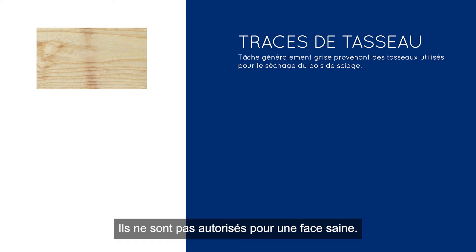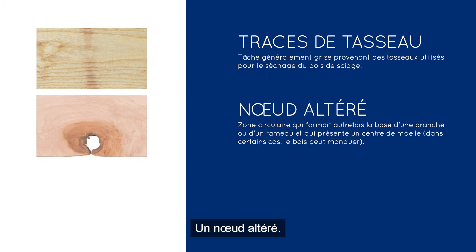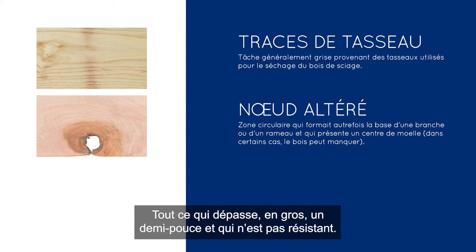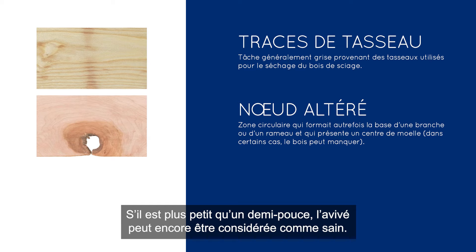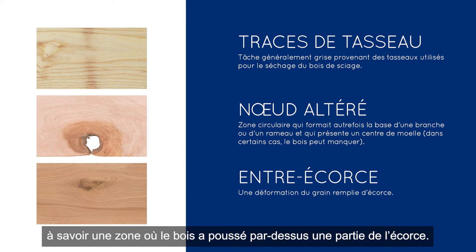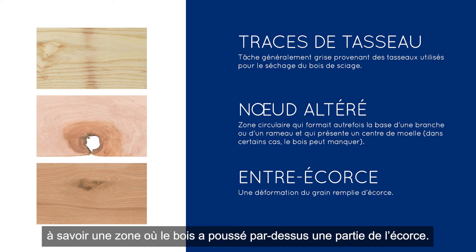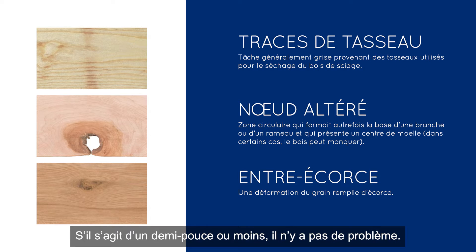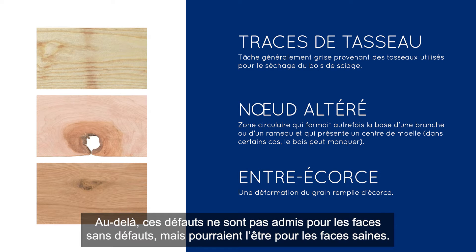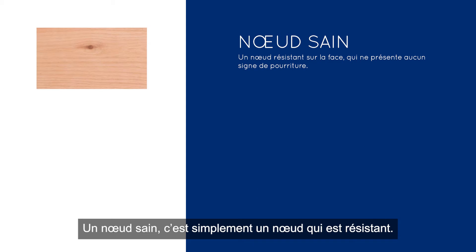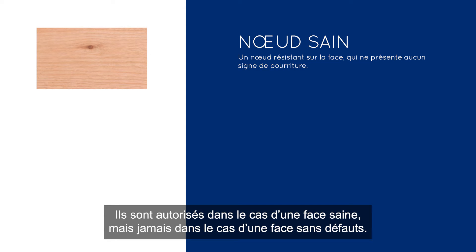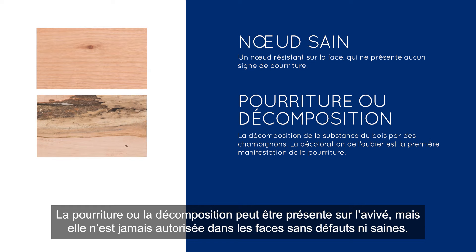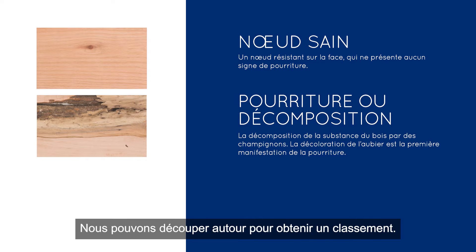Sticker stain would not be allowed in a clear cutting. An unsound knot — anything basically over a half inch that is not solid, if it's loose or has almost a hole — would be considered unsound. If it's smaller than a half inch, it could still be allowed as sound. Bark pocket is pretty much the same: where the wood grew over some bark. If it's a half inch or smaller it's okay; if over that, it's not. A sound knot — simply a knot that's solid — is allowed in a sound cutting but never a clear cutting. Decay or rot is never allowed in a clear or sound cutting; we measure around it to get our grade.